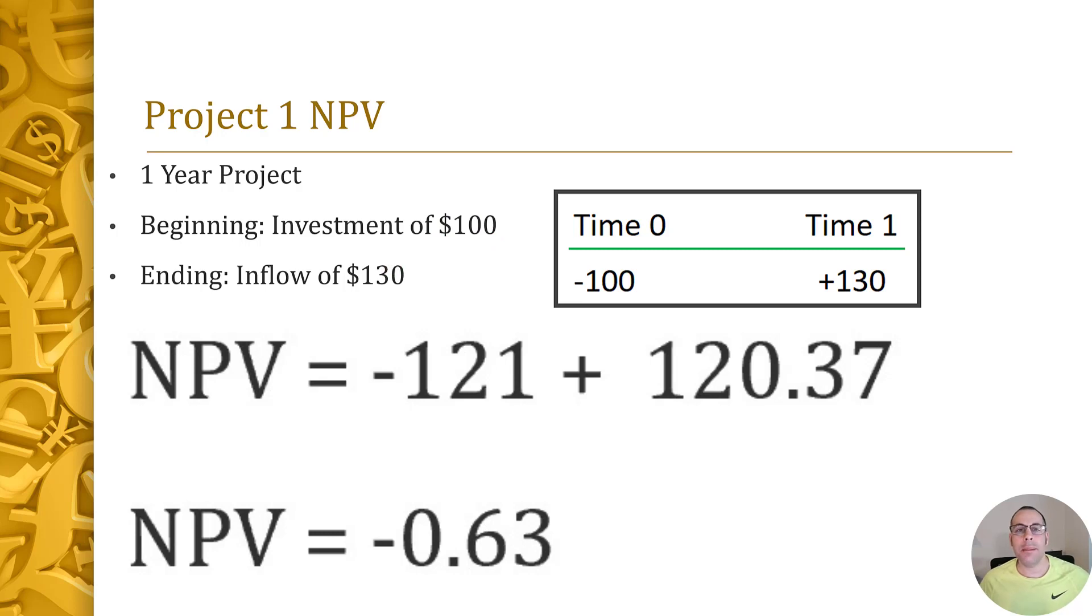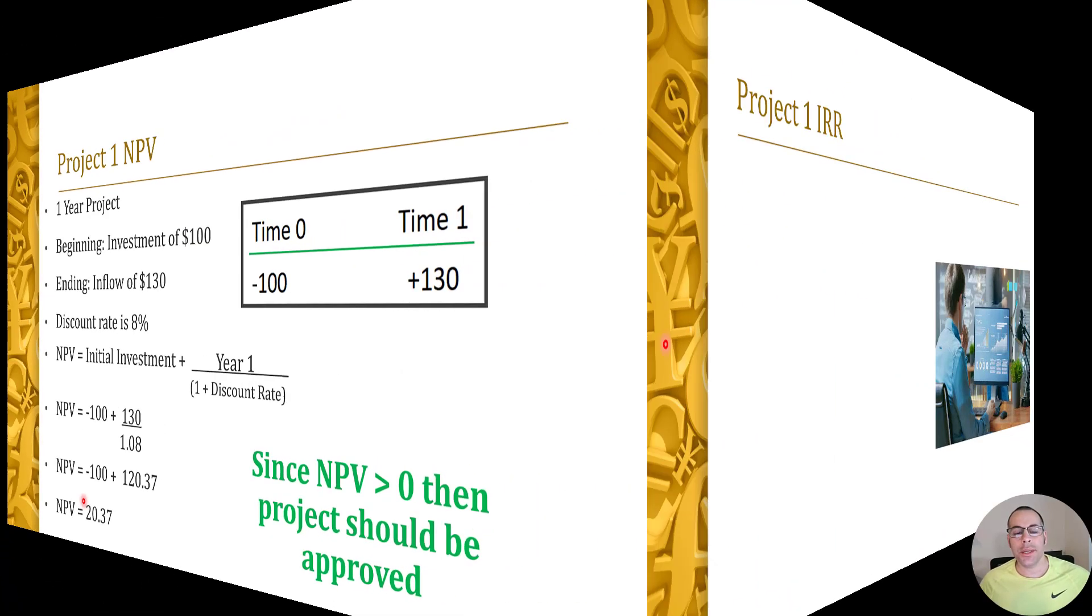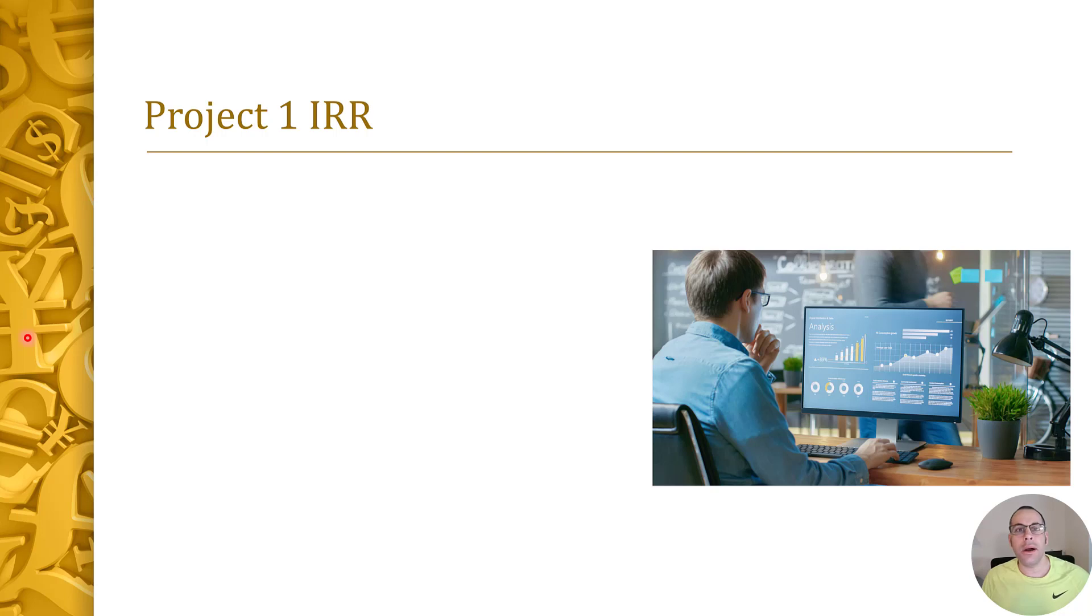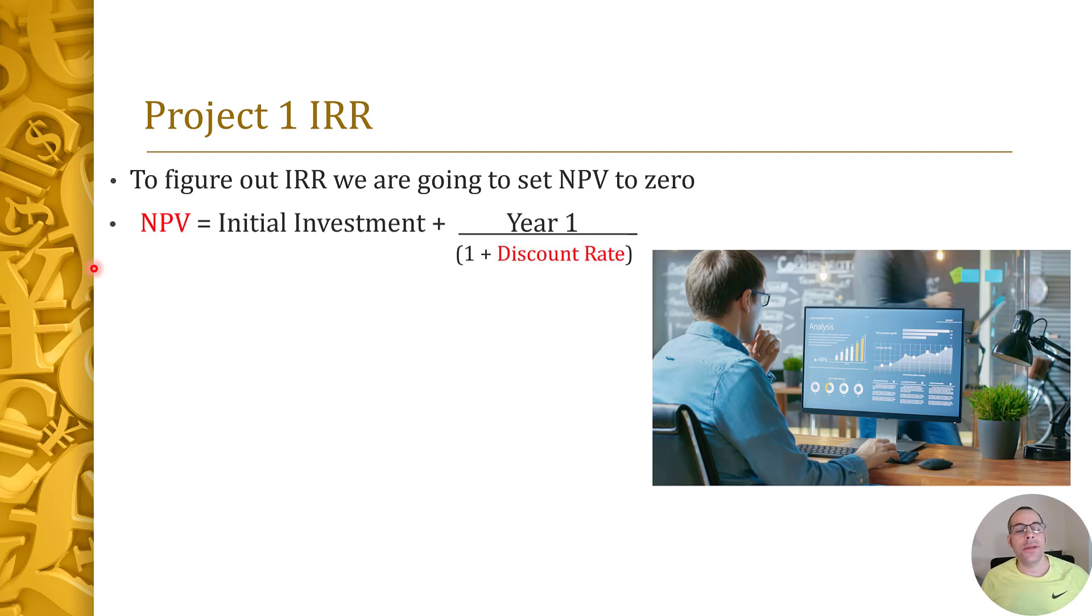Now let's calculate the IRR. So the first thing we need to do is set NPV to zero. So you see it's the same formula as the NPV calculation, except the words in red, NPV and discount rate, are going to be different. So the formula is zero for NPV equals our initial investment plus year one over one plus IRR. On the previous page, we knew the discount rate and our unknown was NPV, so we had to solve for NPV. In this equation, we know the NPV; the unknown is the internal rate of return, so we have to solve for IRR.